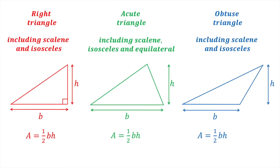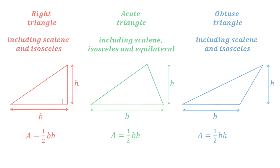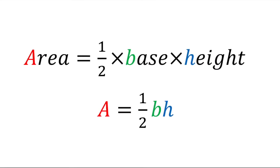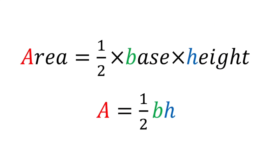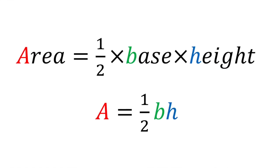So, for all triangles, the same formula for the area applies: area equals half times the base times the height.